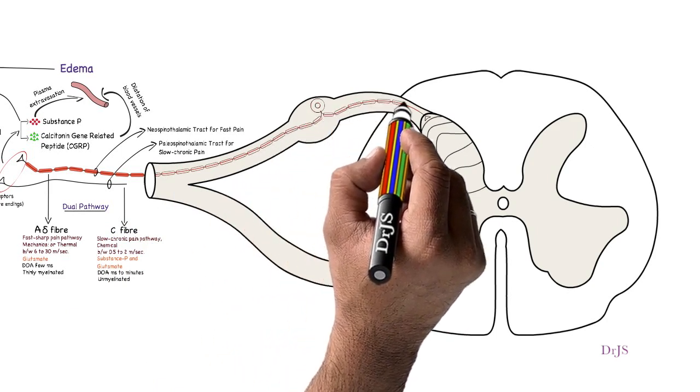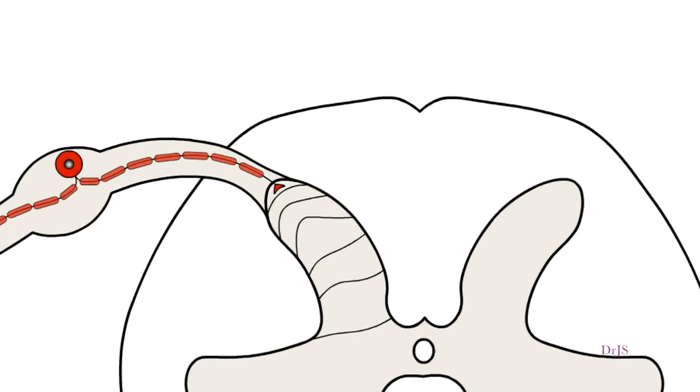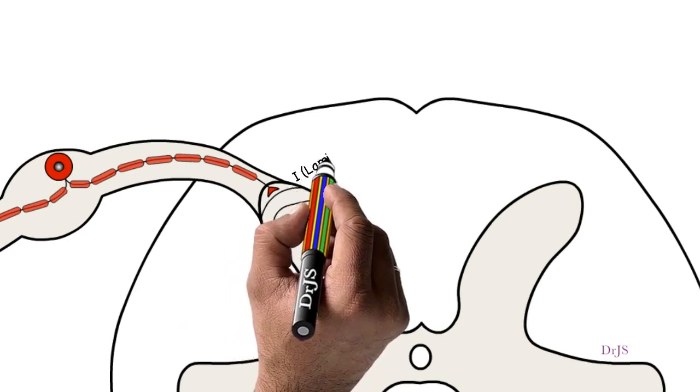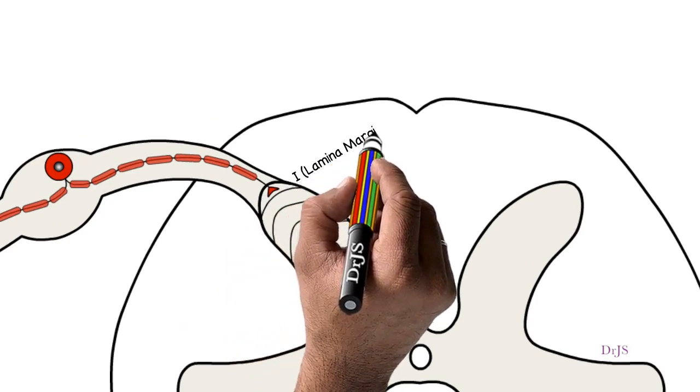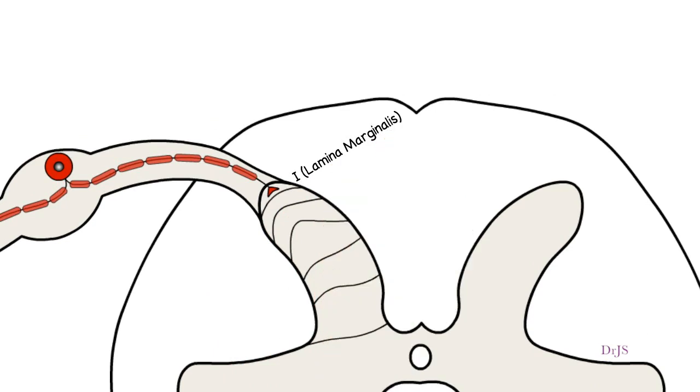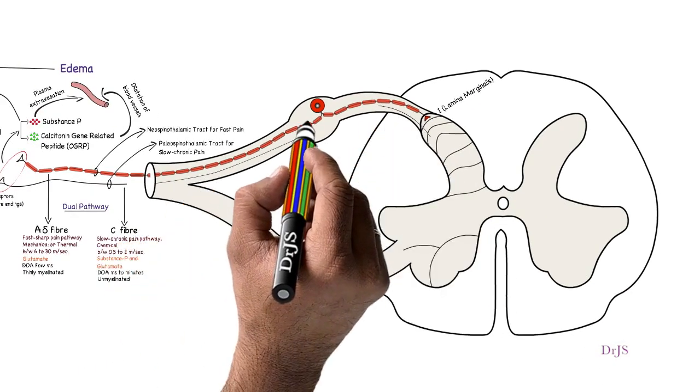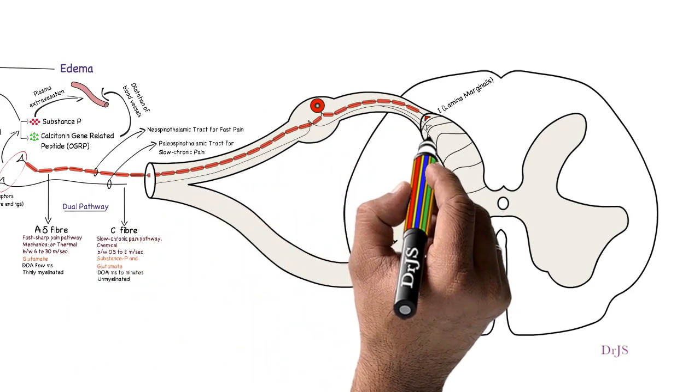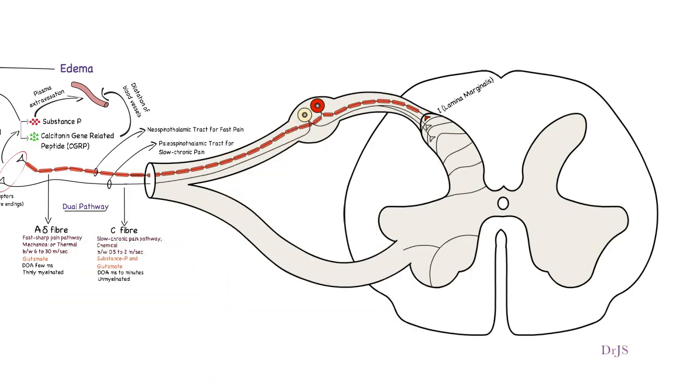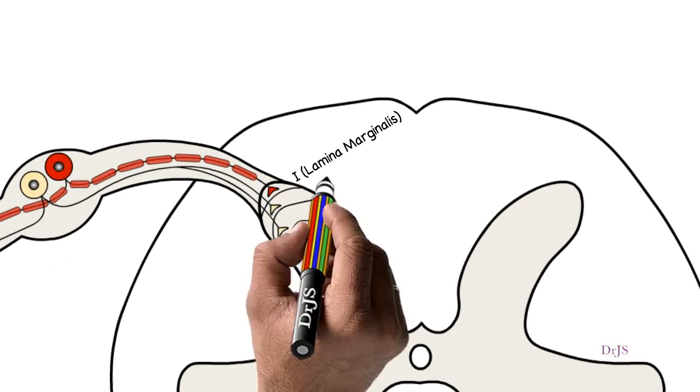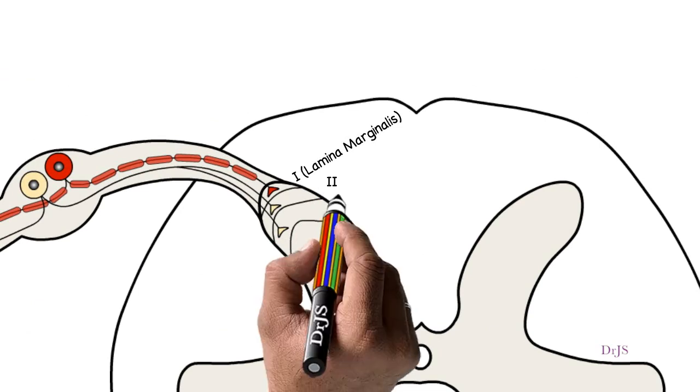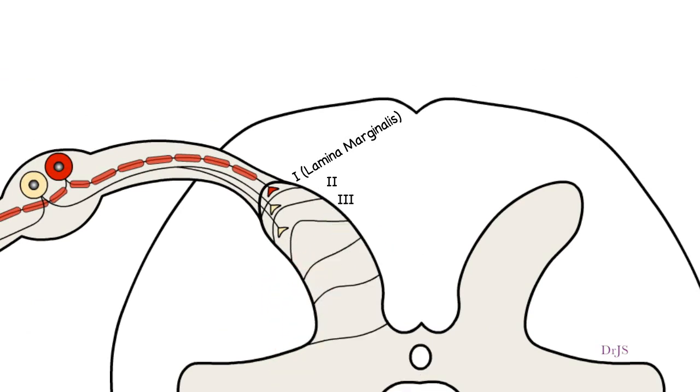The first type, A-delta pain fibers, terminate mainly in lamina 1, which is called lamina marginalis of the dorsal horn. In the paleo pathway, the peripheral fibers terminate in the spinal cord almost entirely in lamina 2 and 3 of the dorsal horn, which together are called substantia gelatinosa.